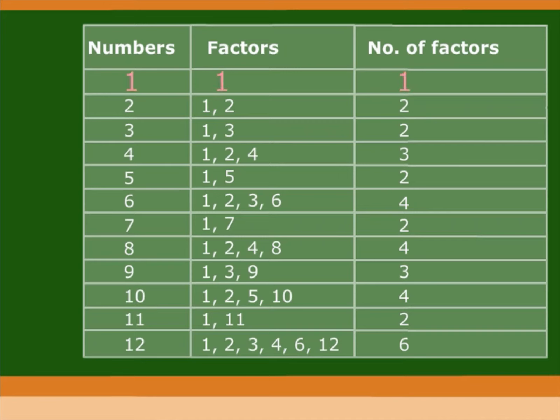The number of factors of one is one. The number of factors of two is two. The number of factors of three is two. The number of factors of four is three. The number of factors of five is two. The number of factors of six is four.